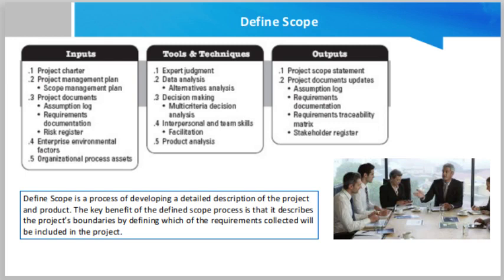First, we shall discuss the project charter. The project charter is a document that provides the high-level project description and product characteristics. It also enlists all the project approval requirements. If a project charter is not being used to its fullest in any organization, then comparable information needs to be developed and used as a basis for the detailed project scope statement. In situations where organizations do not produce a formal project charter, they will usually perform an informal analysis to identify the content necessary for further scope planning.